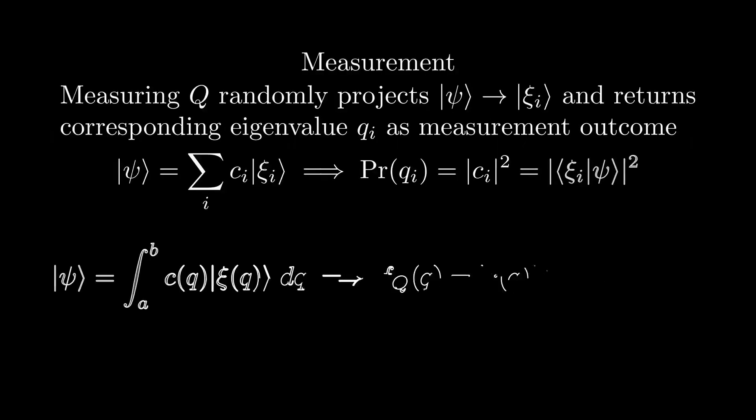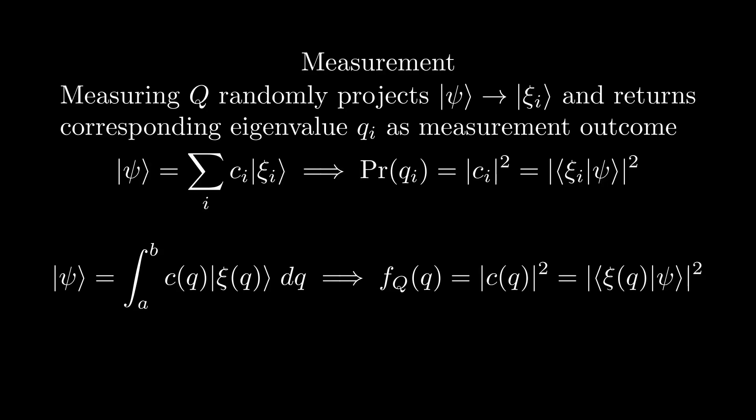By introducing the notion of eigenstates, we can actually formalize what it means to measure something. In particular, measuring an observable means that we randomly project the given state onto one of the eigenstates of the given observable. If our spectrum is discrete, the probability of projecting our original state onto a given eigenstate is given by the absolute value of their inner product, squared. If the spectrum is continuous, this simply gives a probability density instead.